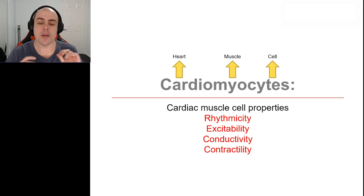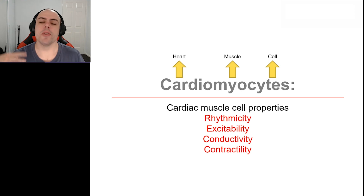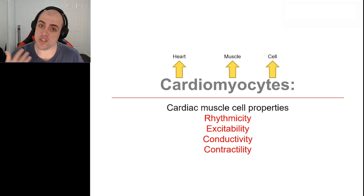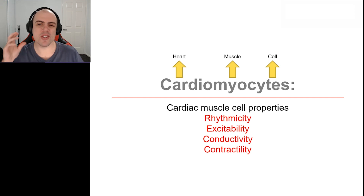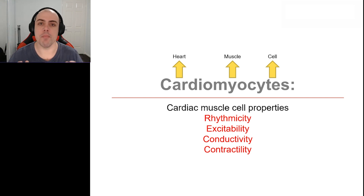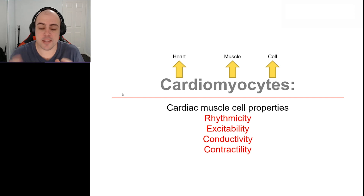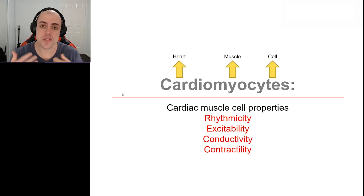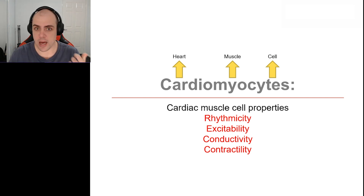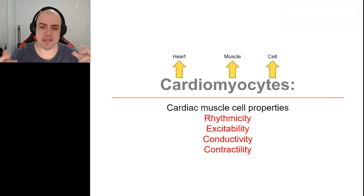Now that we've spent time looking at the overall heart and the pulmonary and systemic circuits, I want to zoom in and look at cardiomyocytes. Cardio means heart, myo means muscle, and cyte means cell — so cardiomyocyte basically translates into heart muscle cell.